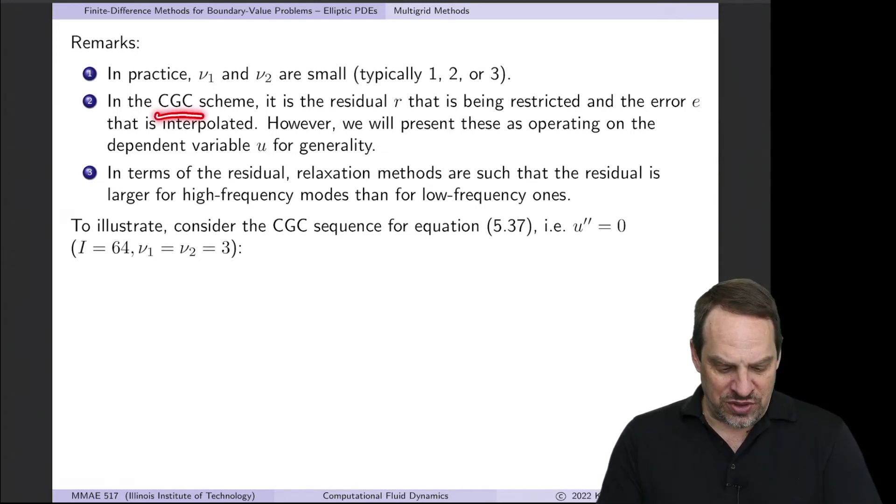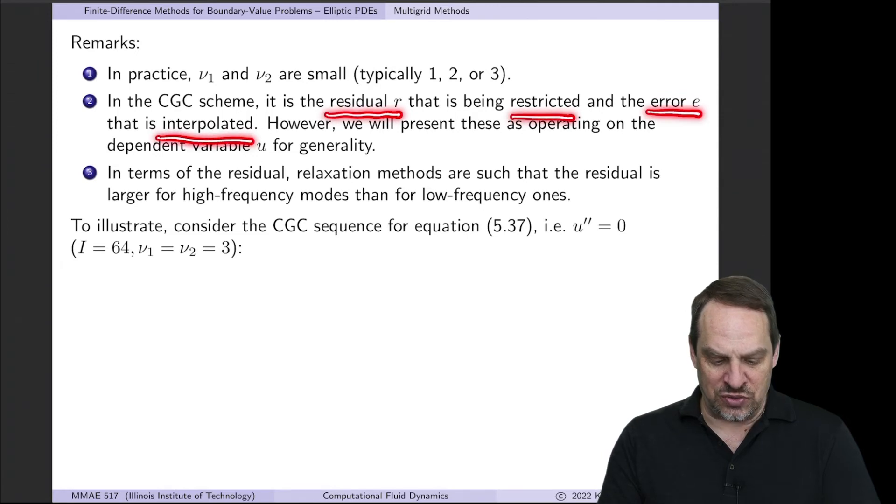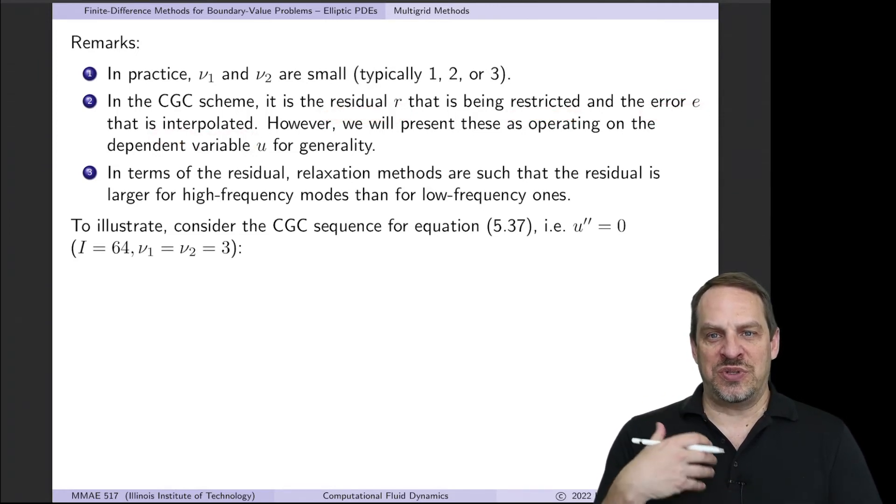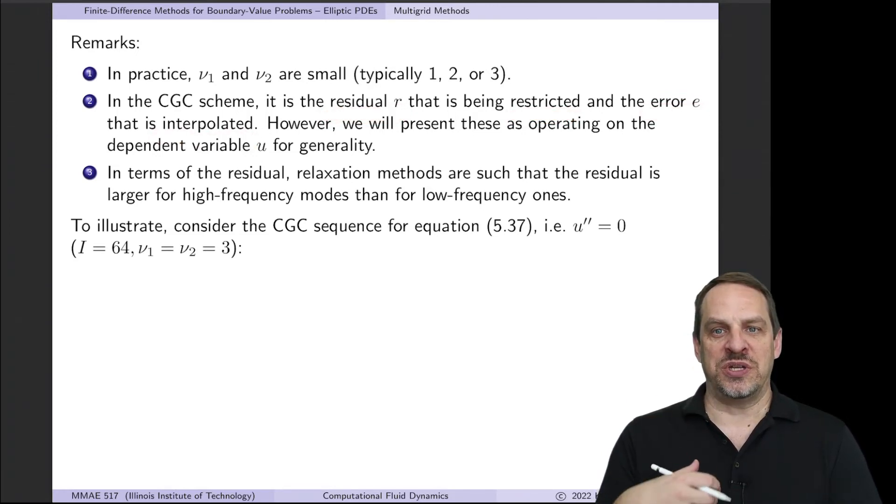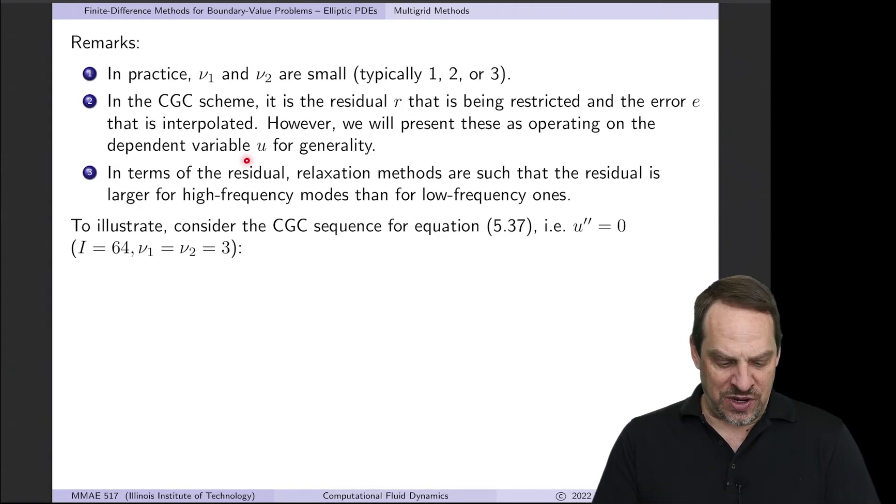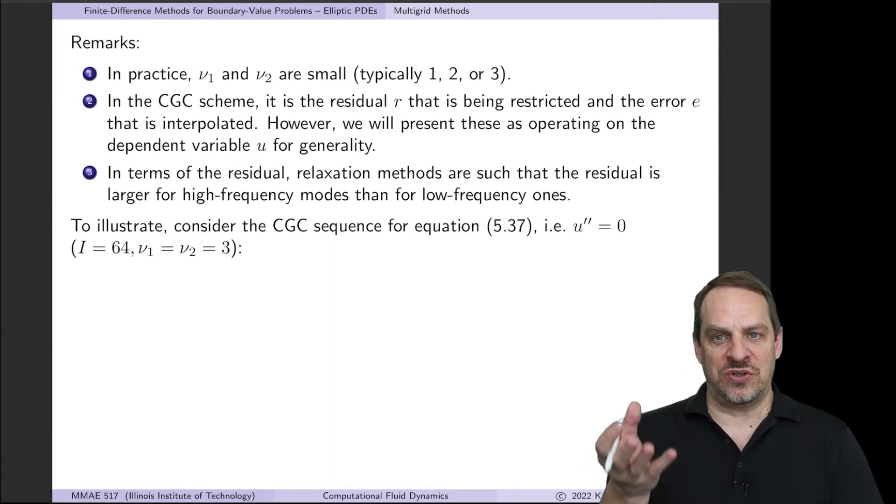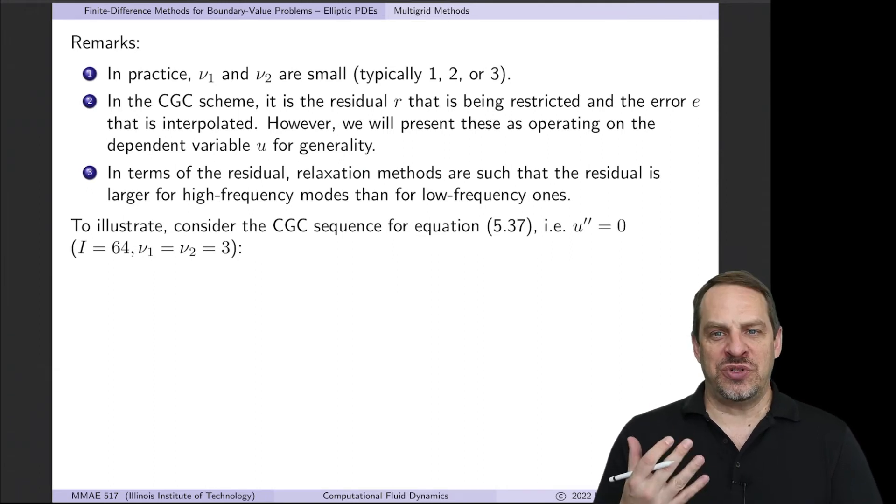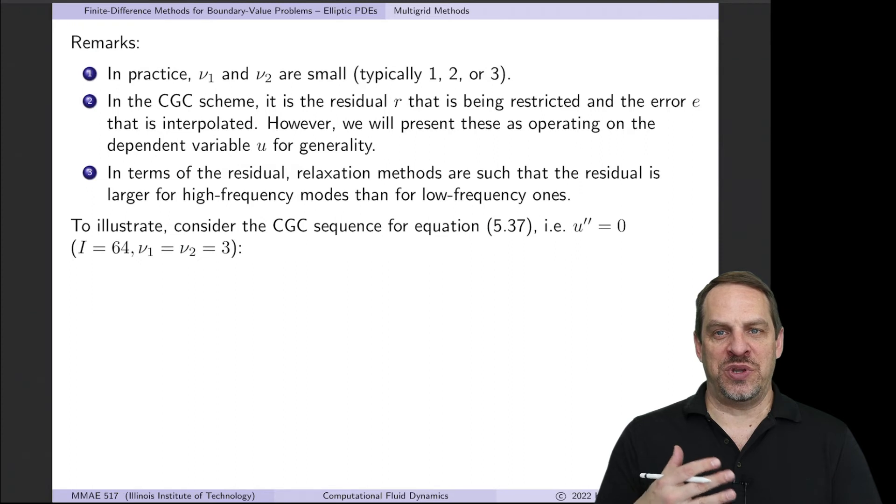In this coarse grid correction scheme, you'll note that it's the residual that's being restricted and it's the error that's being interpolated. But when we talk about these specific operations, interpolation, restriction, relaxation, I'm going to present them as if they are operating on the dependent variable u. But that's just the input to the function. The function can interpolate, restrict, relax on any one of these quantities. So just keep that in mind.